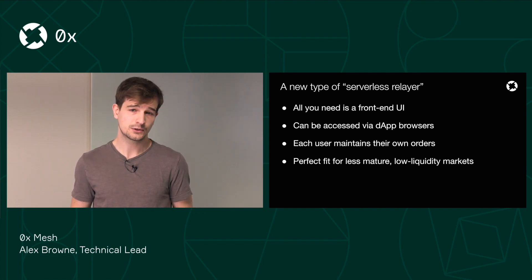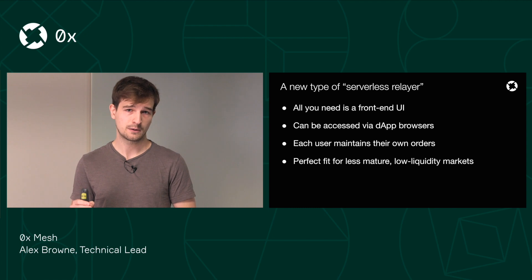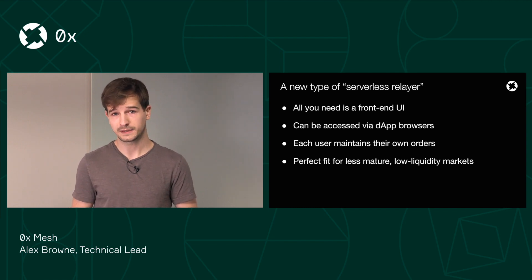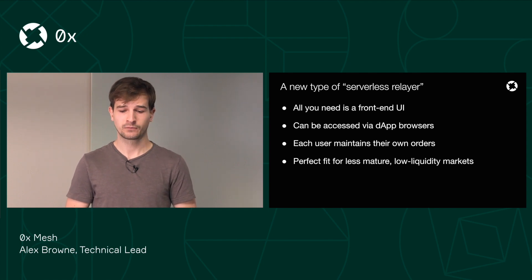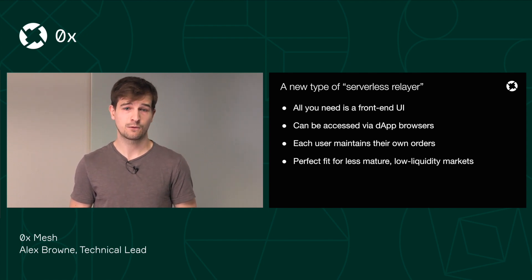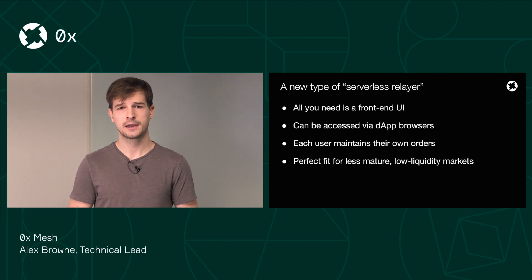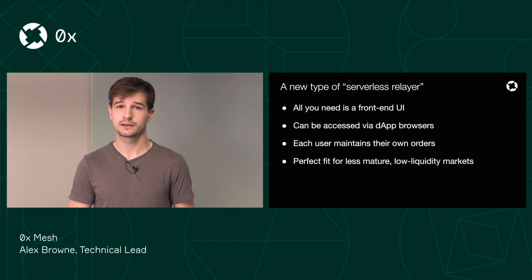In this model, each user has a copy of the order book, and Mesh automatically keeps it up to date by removing orders as they become cancelled or filled. The serverless relayer model is not a great fit for every market, but we think it makes a lot of sense for smaller niche markets where tokens are not listed on relayers yet.